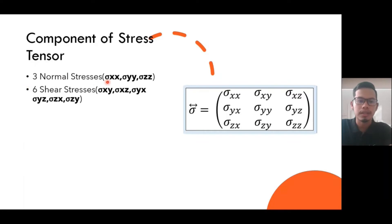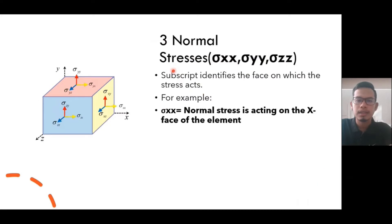Components of stress tensor actually has nine components, which is three normal stresses and six shear stresses. From these nine components we come up to form a matrix, three times three like this.